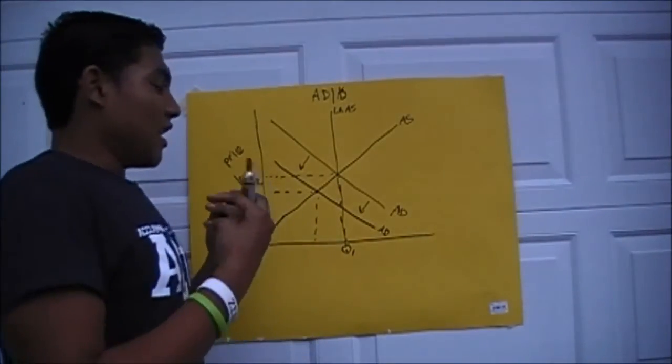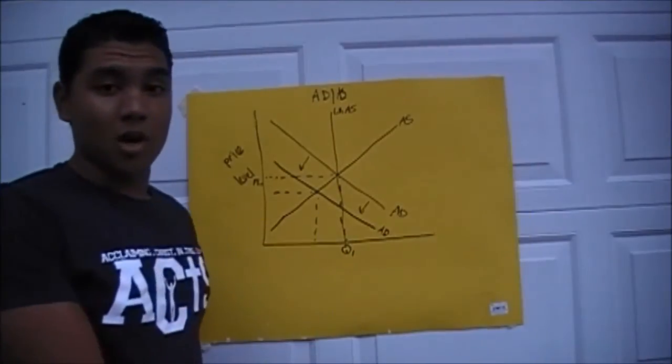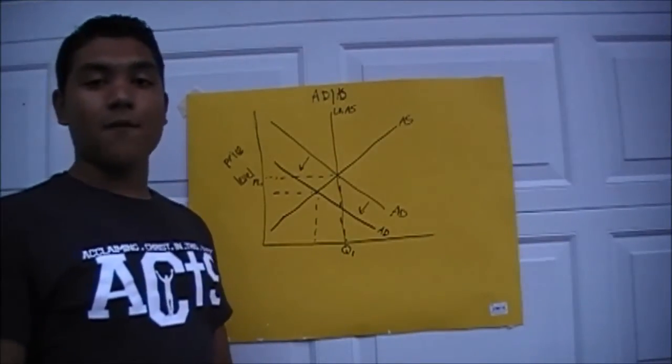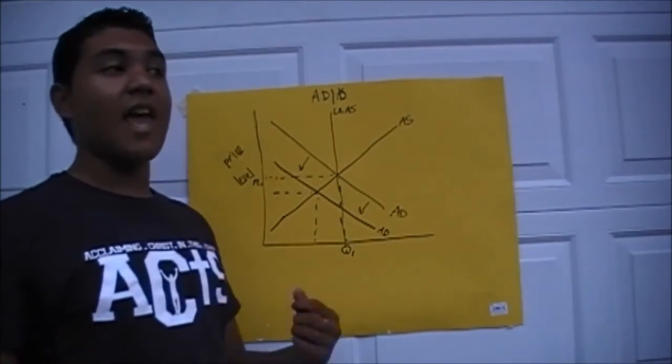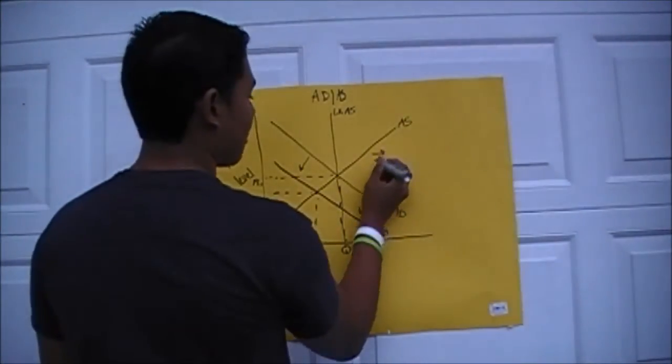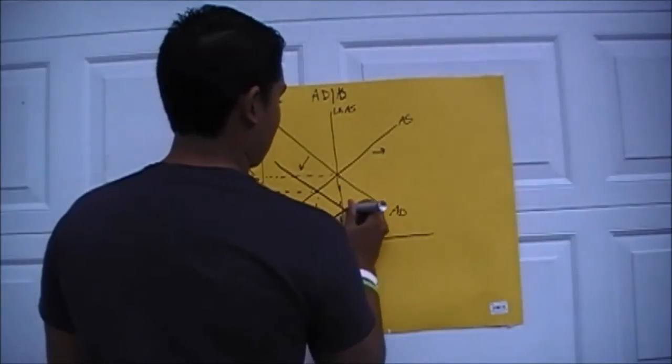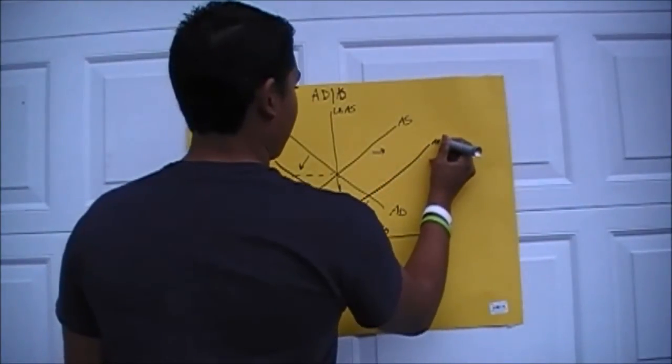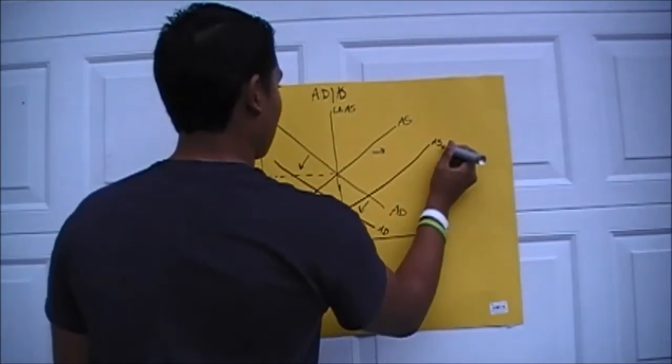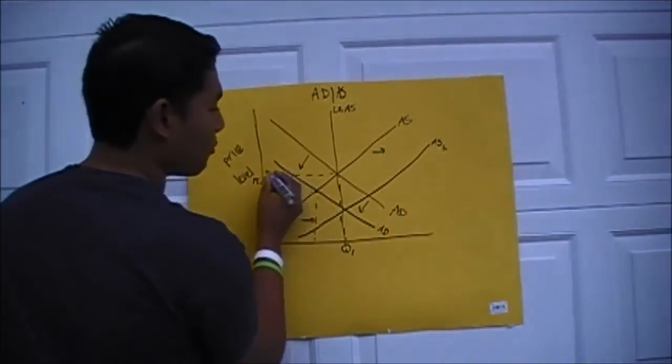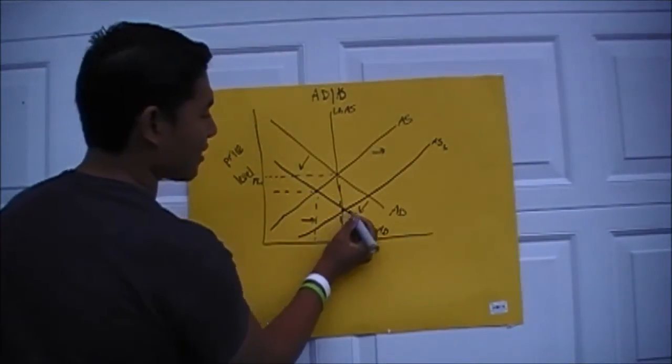Now let's back up again. In the long run, prices of resources will fall when there is a recession, shifting AS to the right. So let's take AS to the right.